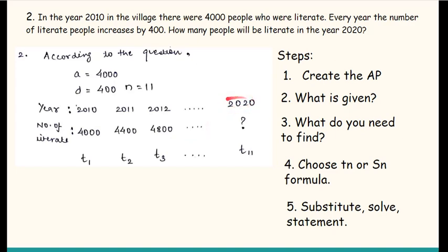What I don't know is: in 2020, how many people will be literate? Now, if you count on your fingers, if 2010 is the first term, 2011 is the second term, 2012 is the third term, then 2020 is the 11th term. That means you know N is 11, you need to find T11. You know A, D, and N, but you don't know TN.